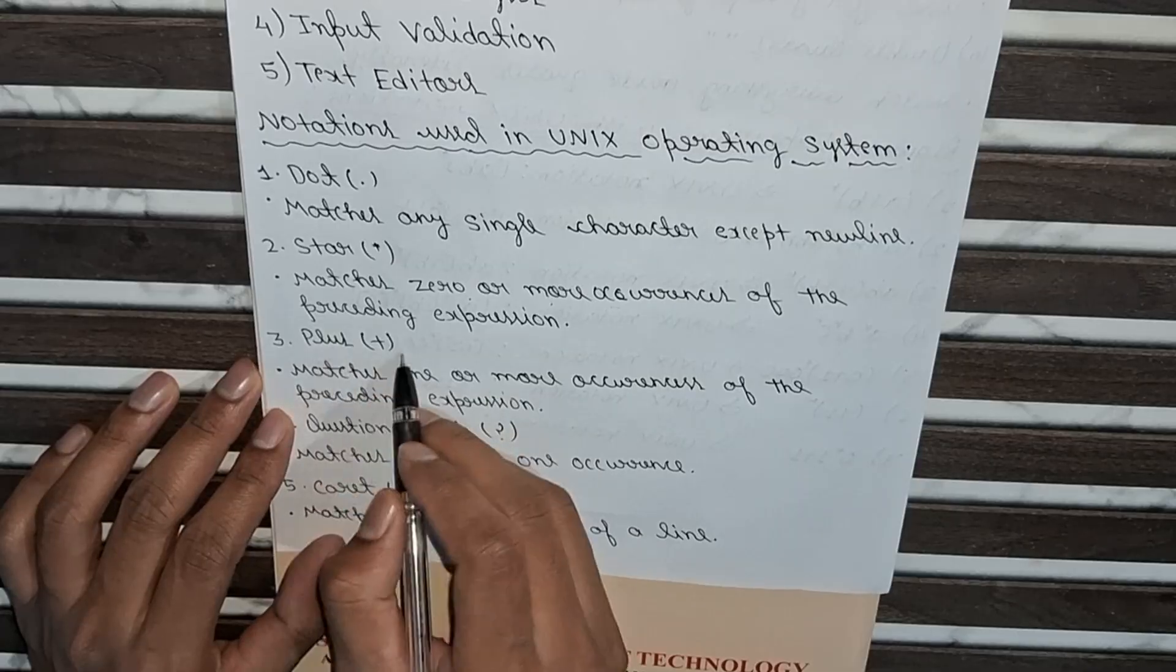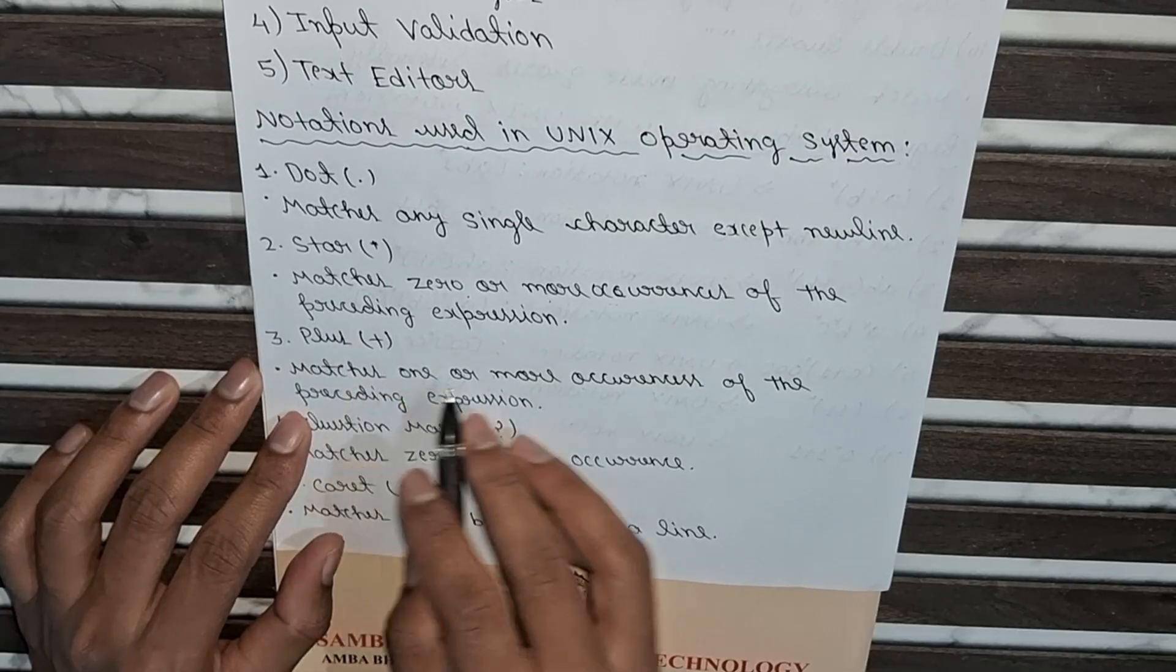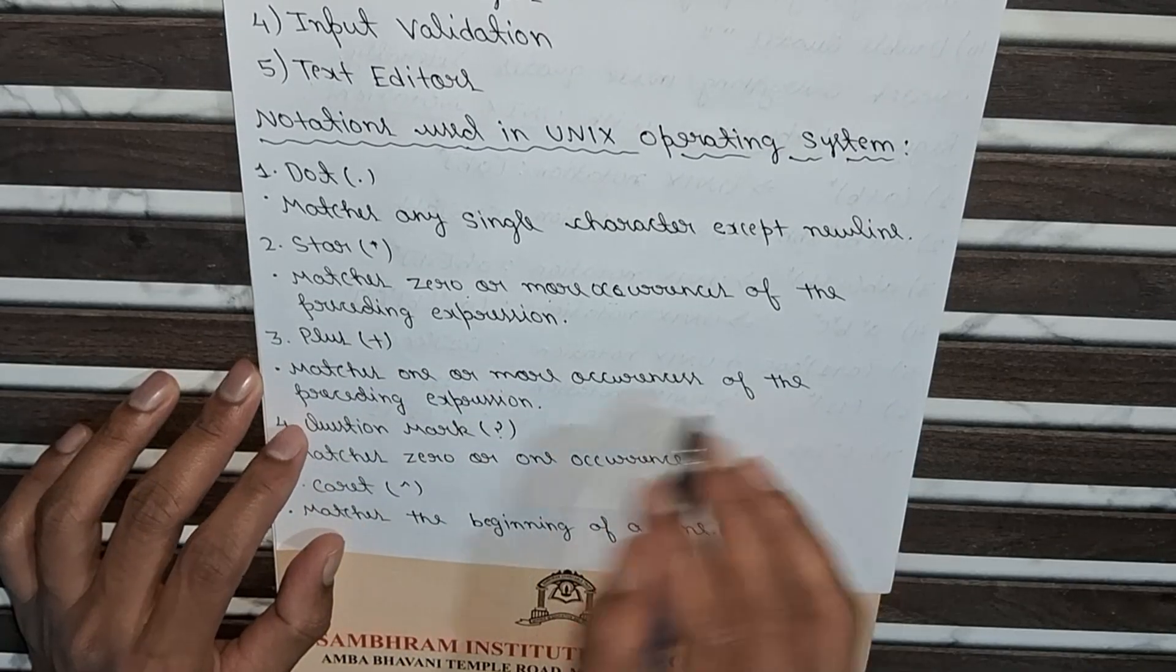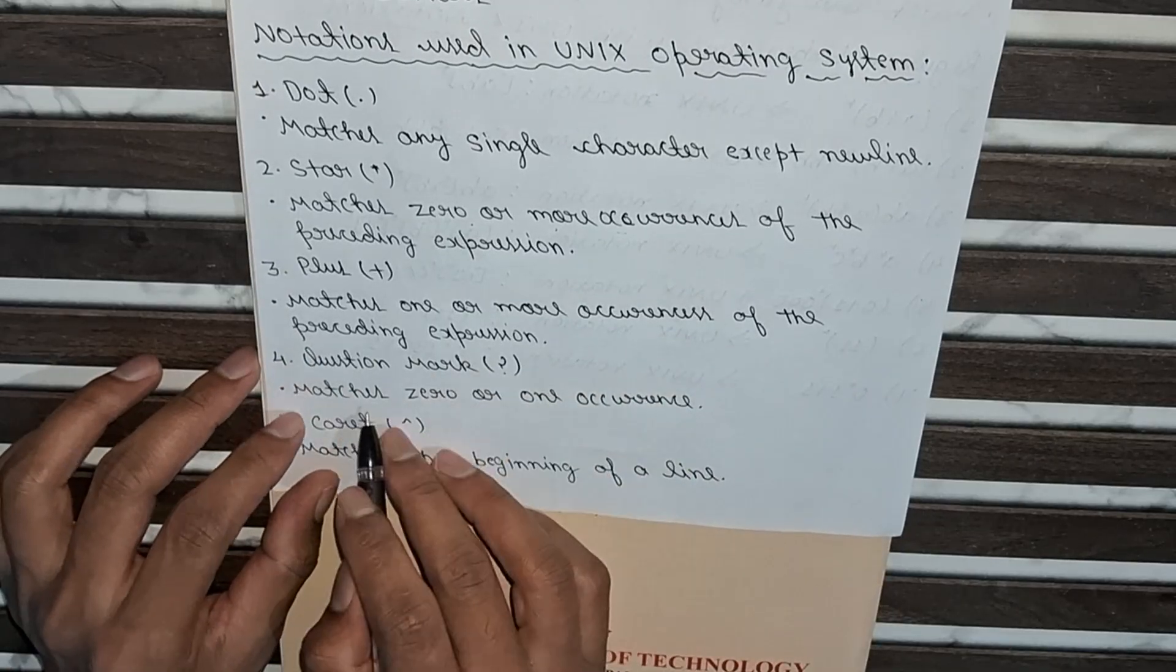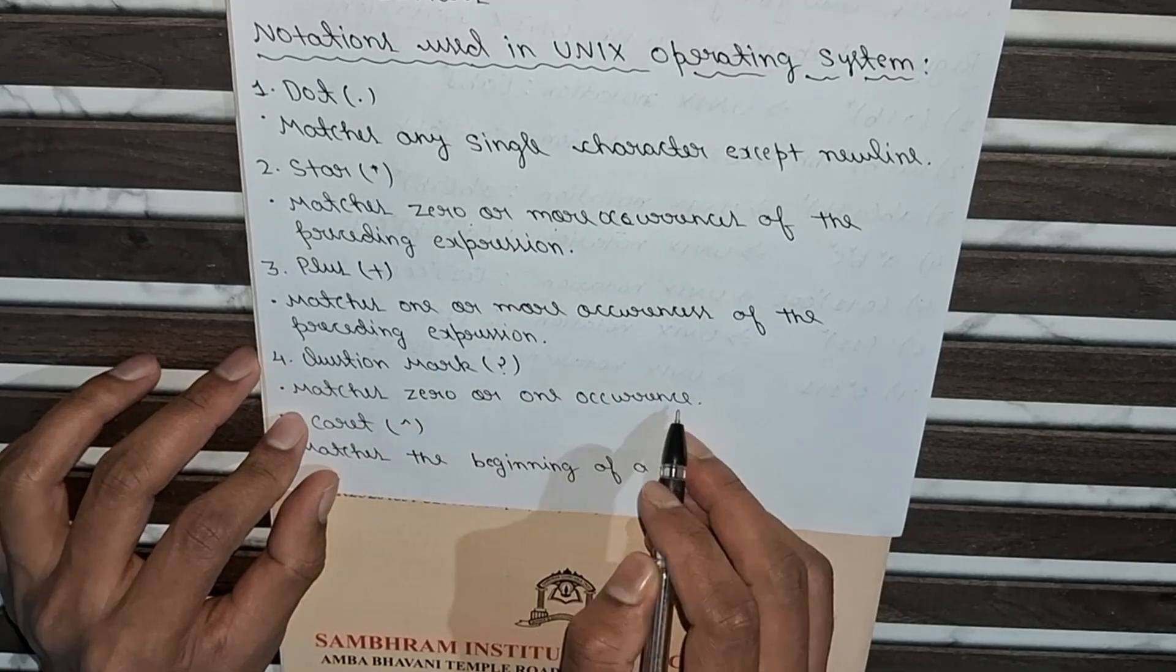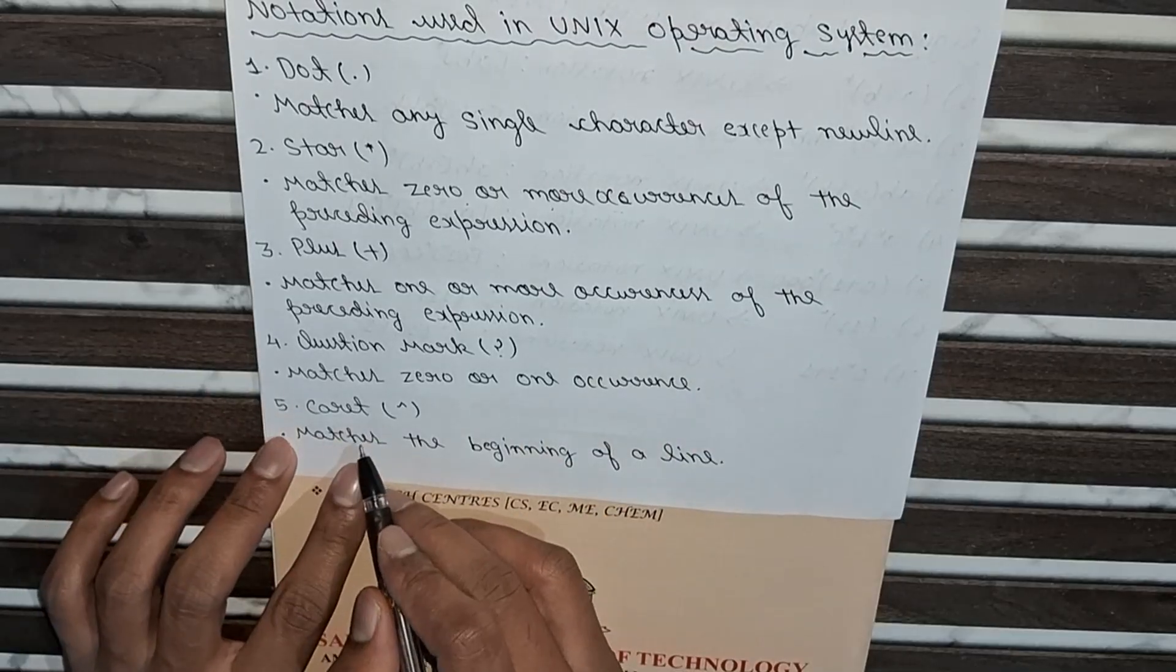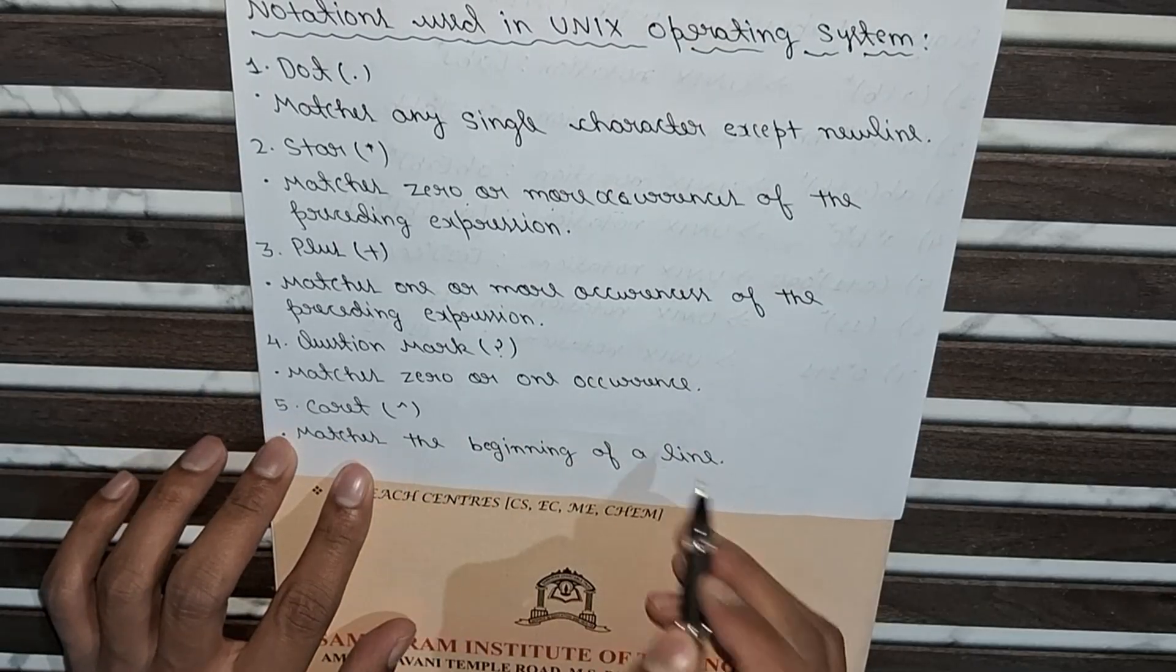Third notation is plus, used for matches 1 or more occurrences of the preceding expression. Fourth one is question mark, matches 0 or 1 occurrences. And the fifth is caret, it is used for matches the beginning of a line.